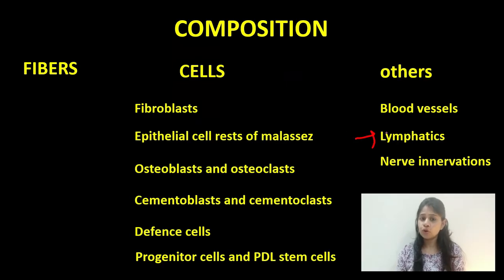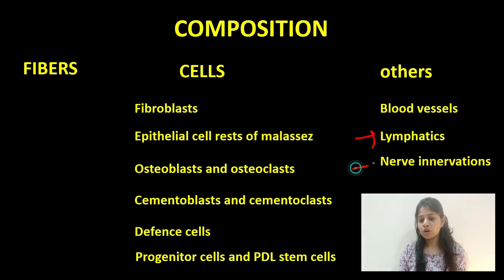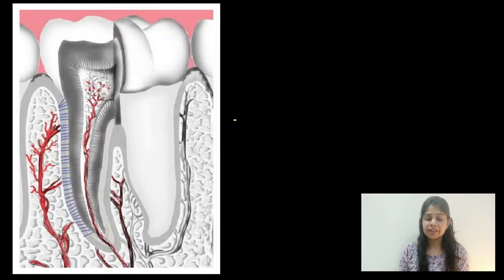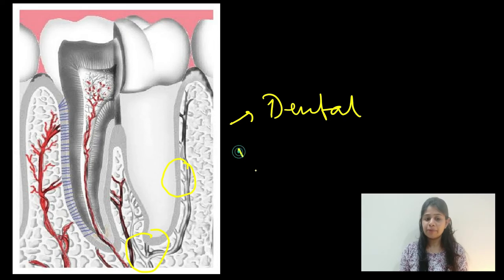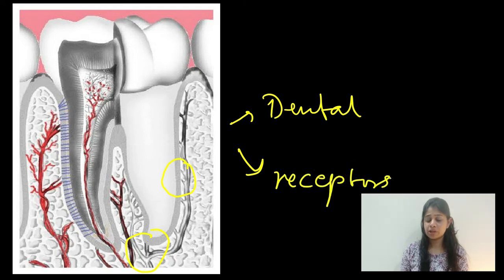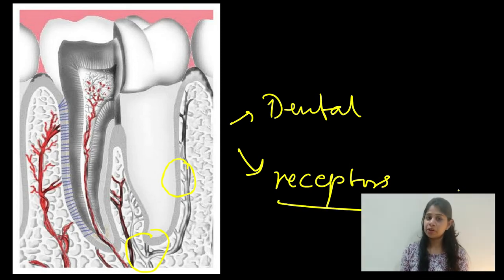The lymphatics follow the path of the blood vessels and drain in the same fashion. Regarding nerve supply, the PDL is supplied by the dental branches of the alveolar nerve. These branches reach the periodontal ligament either through the apical foramen or by penetrating the cribriform plate. The periodontal ligament is also supplied by a rich supply of receptors whose cell bodies are present in the trigeminal ganglion.